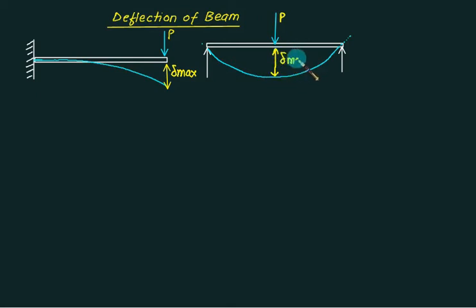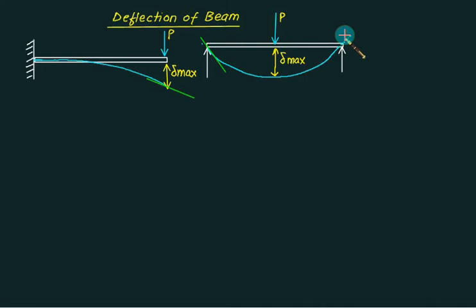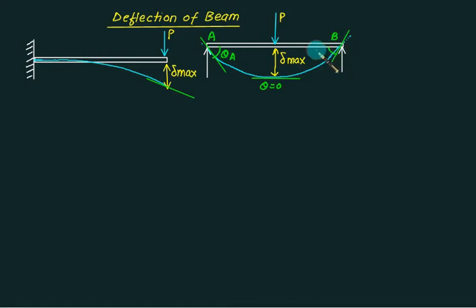We are interested in the value of delta, that is the deflection. At the same time, we are interested in the value of the slope of this elastic curve — either at this point, or at this point, or at this point. The slope at this point is 0. This value will be called theta A, this is point B, and this value will be called theta B, and the angle made with the horizontal will be called theta A.